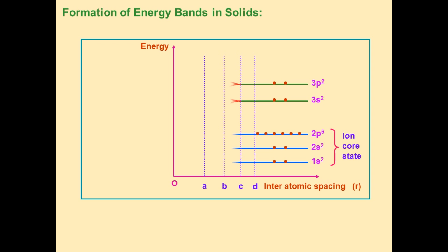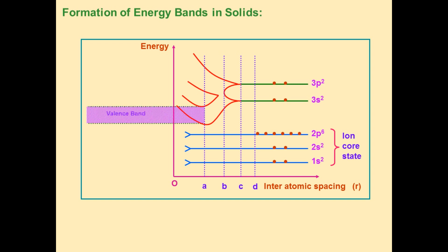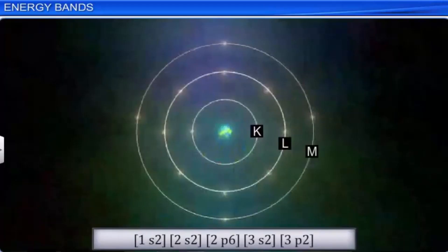In the graph on the interatomic spacing axis, I consider 4 points: A, B, C, and D. By using this graph I will explain the formation of the valence band and conduction band. This is a short video.